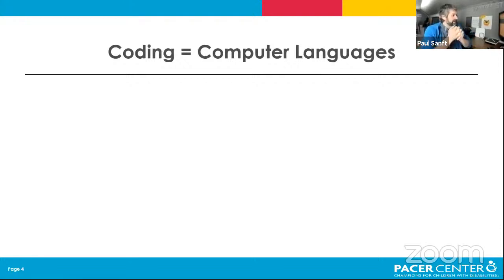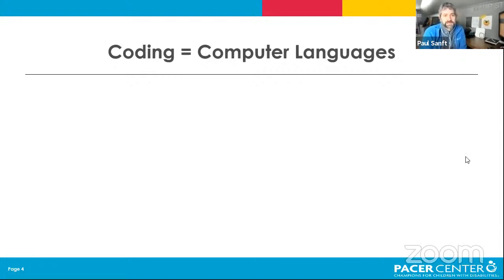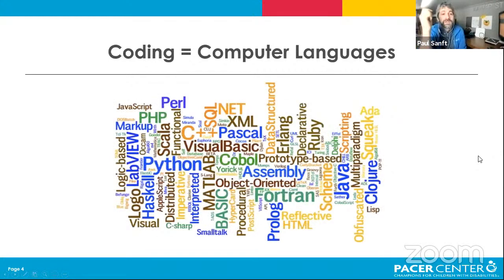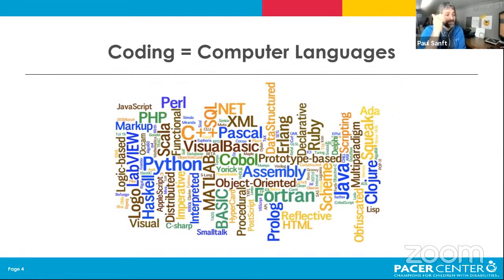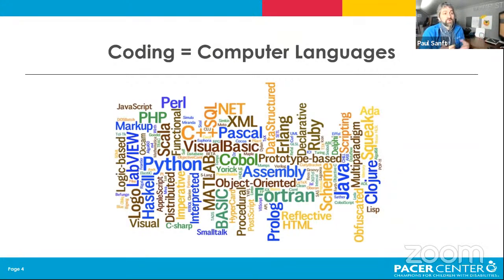Coding is a complex thing - it's really a computer language. Anytime you do coding you have to learn a specific language, and there are lots of different ones: Java, Python, C++, JavaScript - there are so many different languages out there. Learning all of them is near impossible, but learning a couple of them really well and parts of others does open up a lot of options in the world of computer science.